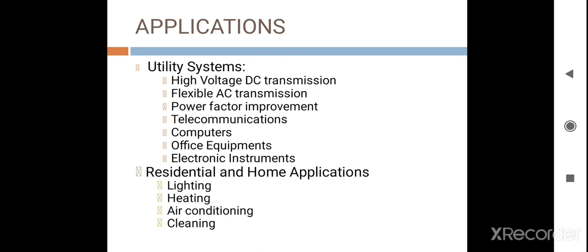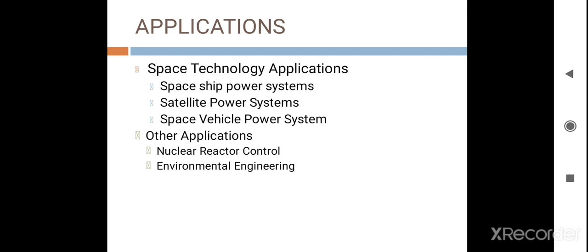Power electronic devices are also used in residential and home applications such as lighting, heating, air conditioning, and cleaning. Additionally, they are used in space technology applications including spaceship power systems, satellite power systems, and space vehicle power systems. Some other applications include nuclear reactor control and environmental engineering. Power electronic devices are used in most areas.